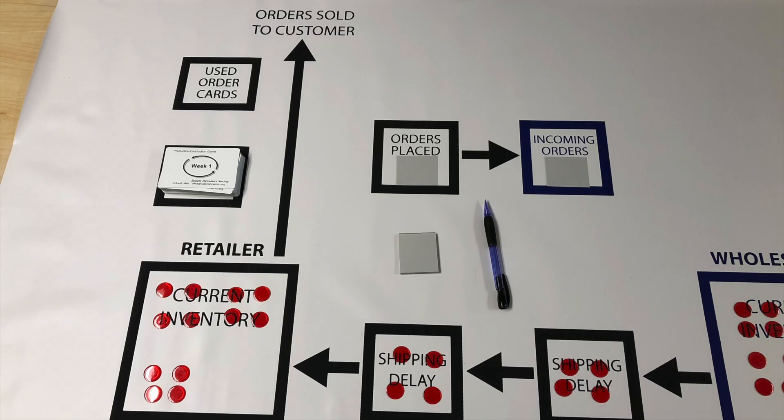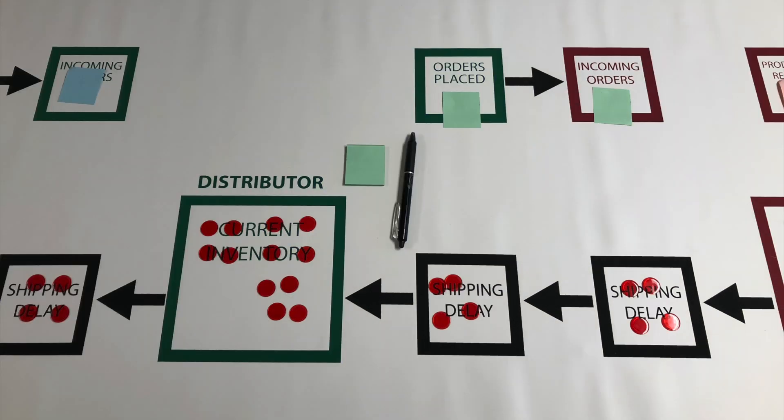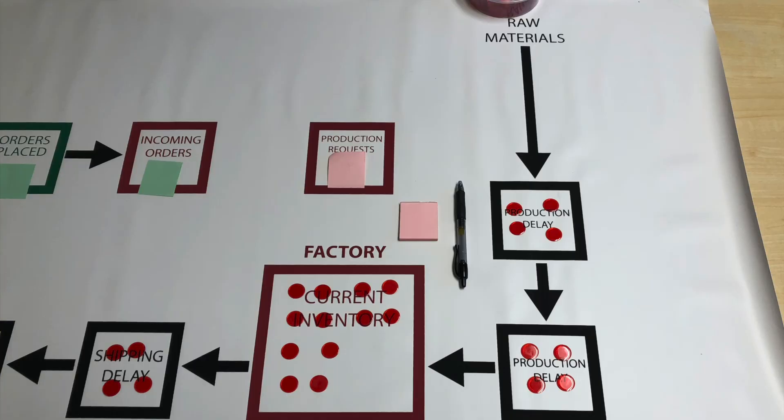The retailer sells beer to the customer, the wholesaler sells beer to the retailer, the distributor sells beer to the wholesaler, and the factory produces beer for the distributor.